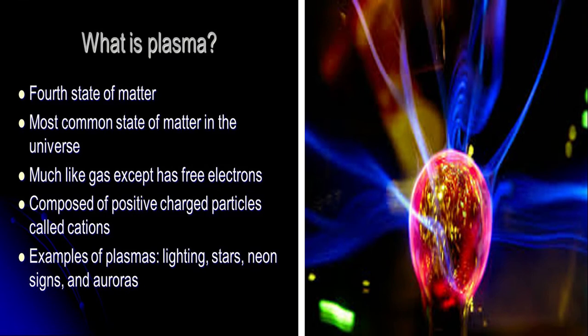So what is plasma? Plasma is the fourth state of matter. Most common state of matter in the universe. Much like gas except free electrons. Composed of positive charge particles called cations. Examples of plasma: lightning, stars, neon signs and auroras.